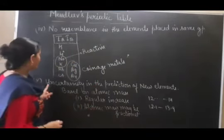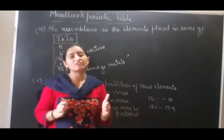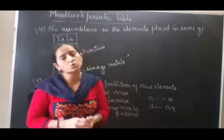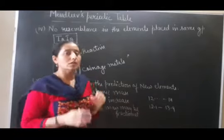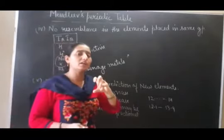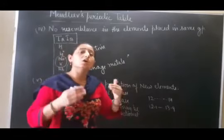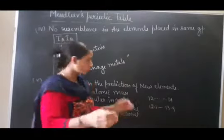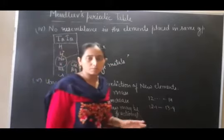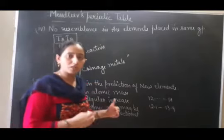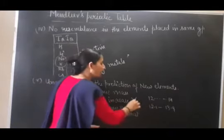The fifth demerit is uncertainty in the prediction of new elements. While it was good that spaces were left for future elements, it is uncertain how those new elements would be arranged. The entire table is based on atomic mass as the fundamental property, and atomic mass never increases regularly.